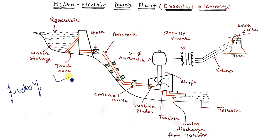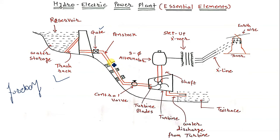The next element is the gate. The gate is a provision meant for controlling the flow of water, because we have to control the flow from the reservoir to the blades of the turbine. For that purpose the gate is generally used.